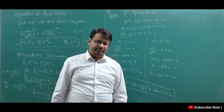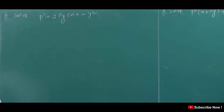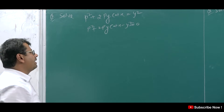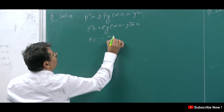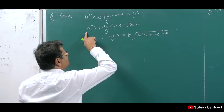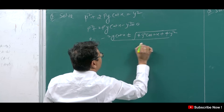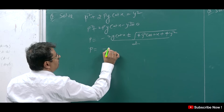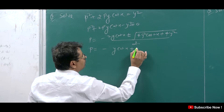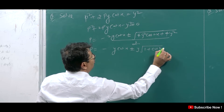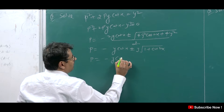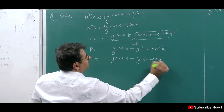The next question is: p² - 2py·cot x = y². Rearranging: p² - 2py·cot x - y² = 0. This is a quadratic in p. Using the quadratic formula, the roots are: p = [2y·cot x ± √(4y²·cot²x + 4y²)] / 2.